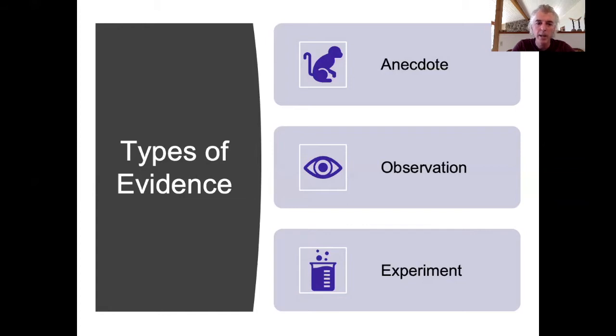The three types of evidence that we're going to talk about today are the anecdote, observations, and experiments.